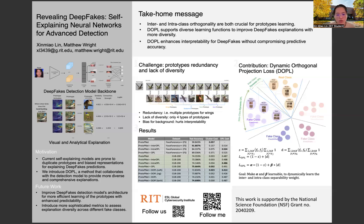Now let me introduce our solution, Dynamic Orthogonal Projection Loss, or DOPL. This approach fundamentally improves how our model learns and utilizes prototypes for deepfake detection. At its core, DOPL works by maintaining two crucial types of relationships between prototypes: inter-class orthogonality, ensuring prototypes for real and fake images are distinctly different from each other, and intra-class orthogonality, making sure prototypes within the same class capture different meaningful features.